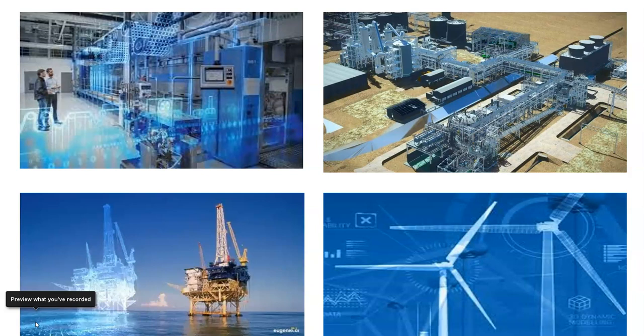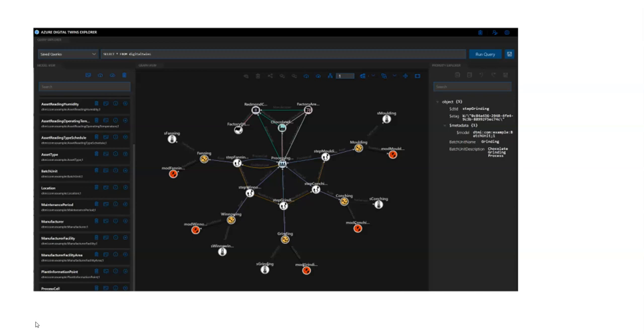This will actually save a lot of money for the company. In this picture, you can see various factories replicated in the form of twin graphs, which helps to monitor, track, and get data from each machine from a centralized location. It is also integrated with IoT Hub. Here is a graph showing how it is created on Azure Digital Twins. Thanks for watching.